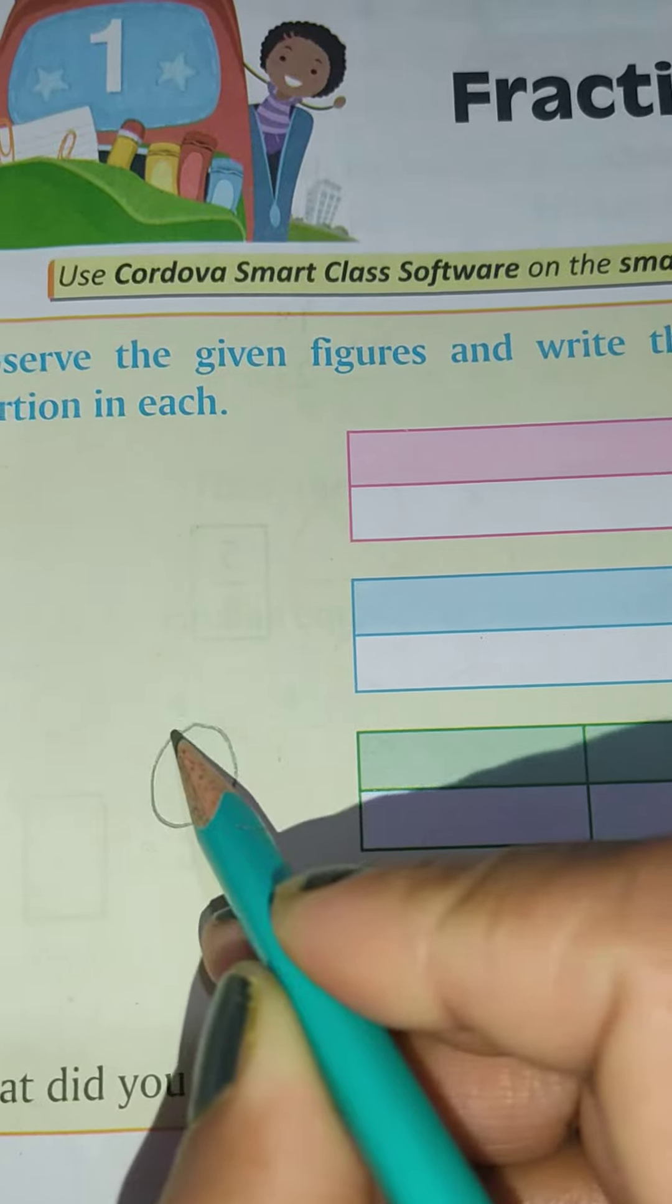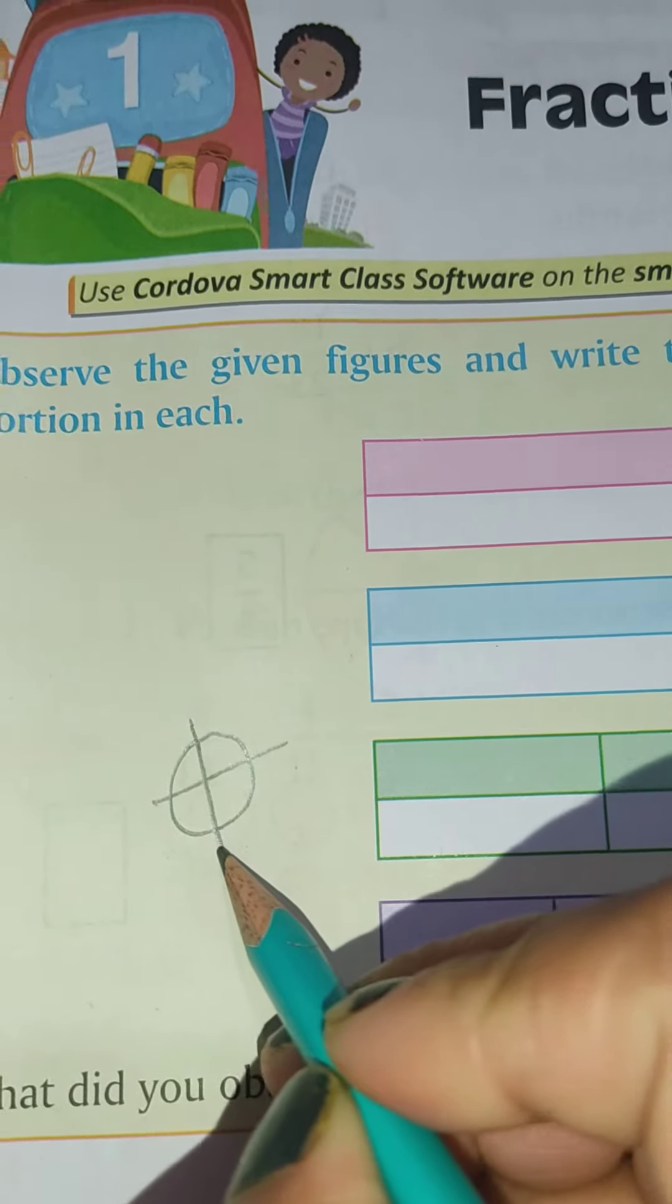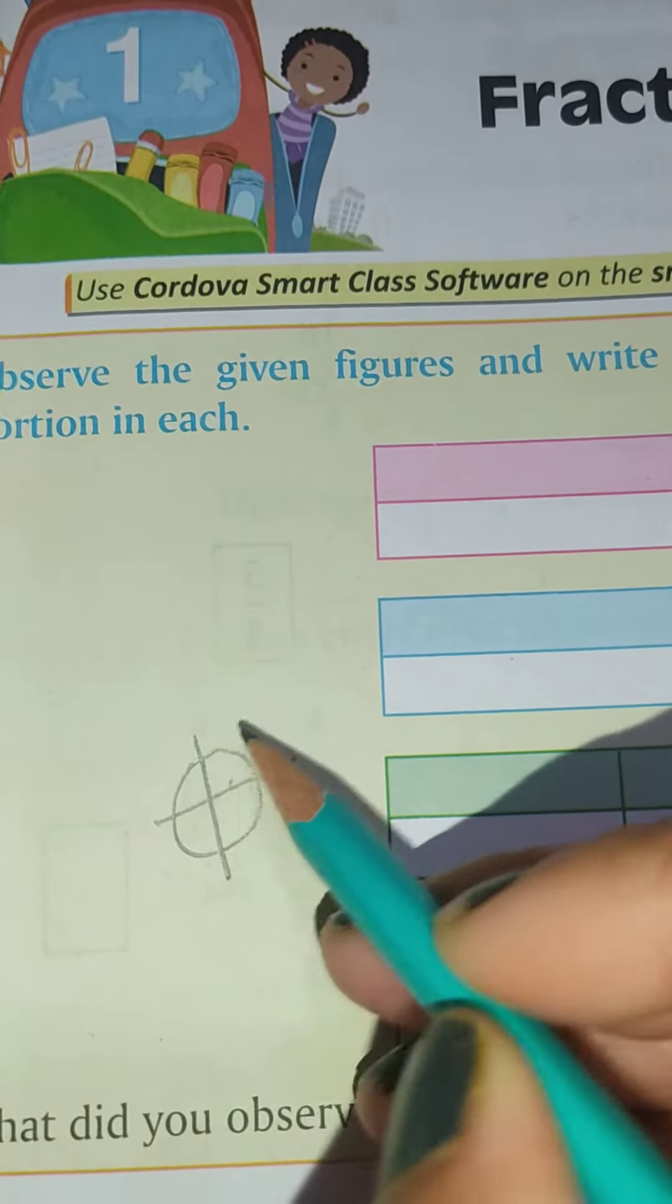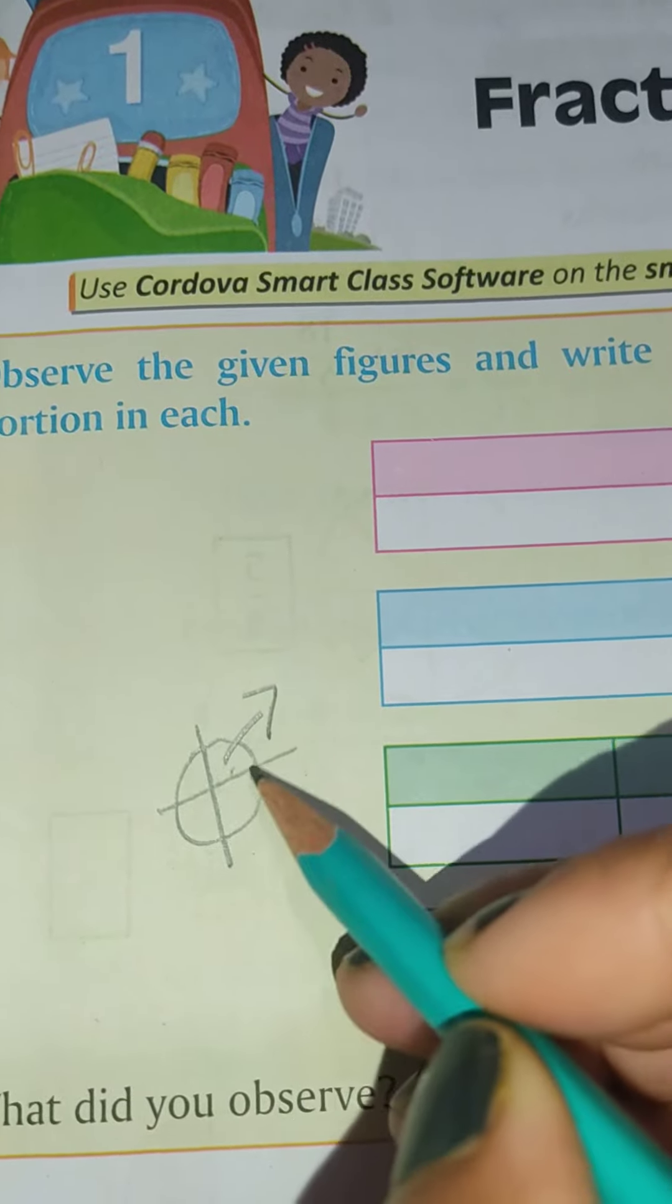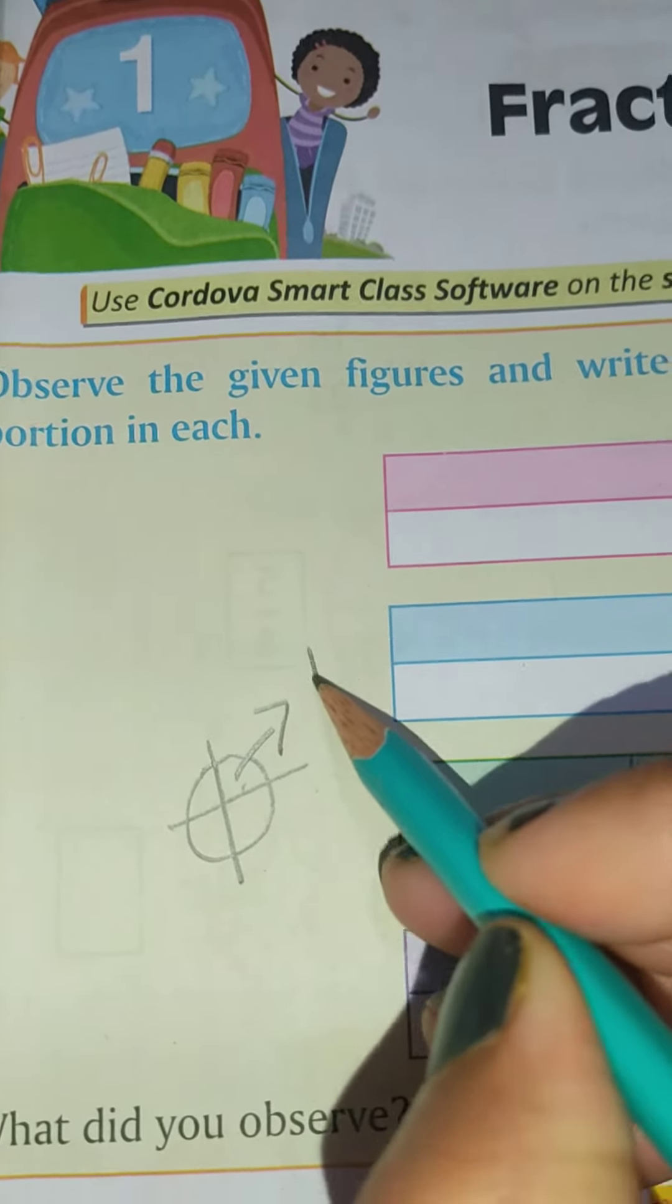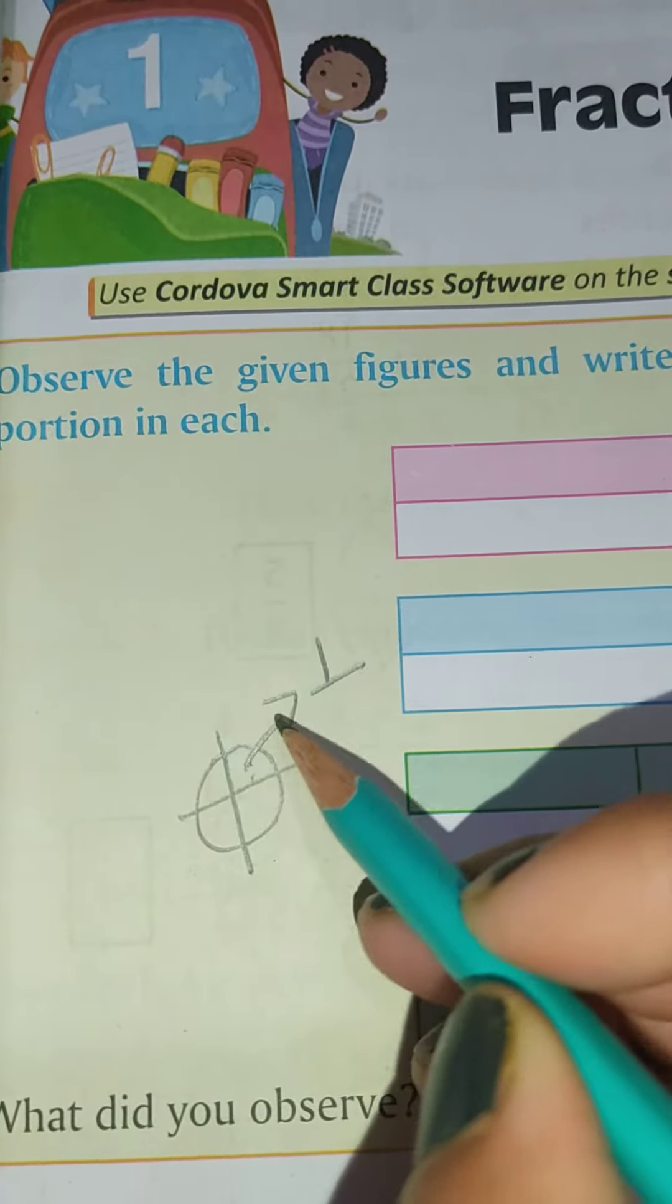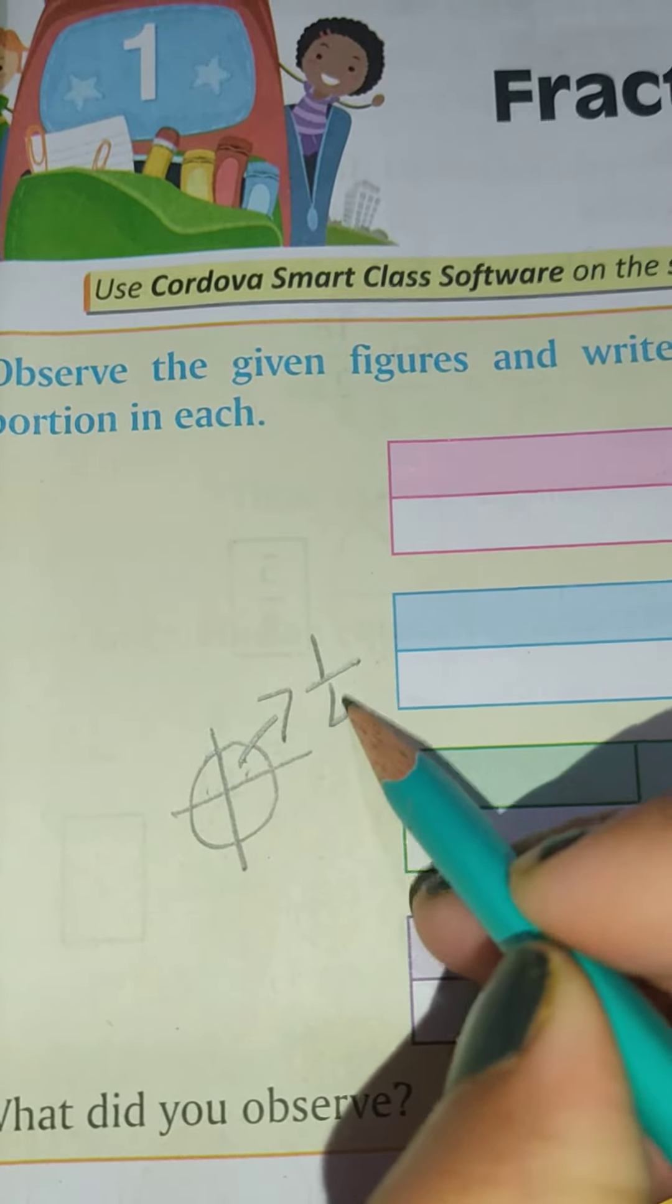Suppose this is a circle. I divide it into four parts. So one part, this part is a part of a whole circle. So this will be one. How many parts? One. And total parts? Four. So this is one fourth.